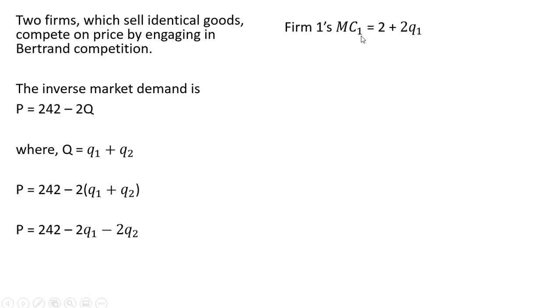Firm 1's marginal cost is given as follows: 2 plus 2 times firm 1's output. And firm 2's marginal cost is identical. Let's solve for price and output of each firm, assuming Bertrand competition.